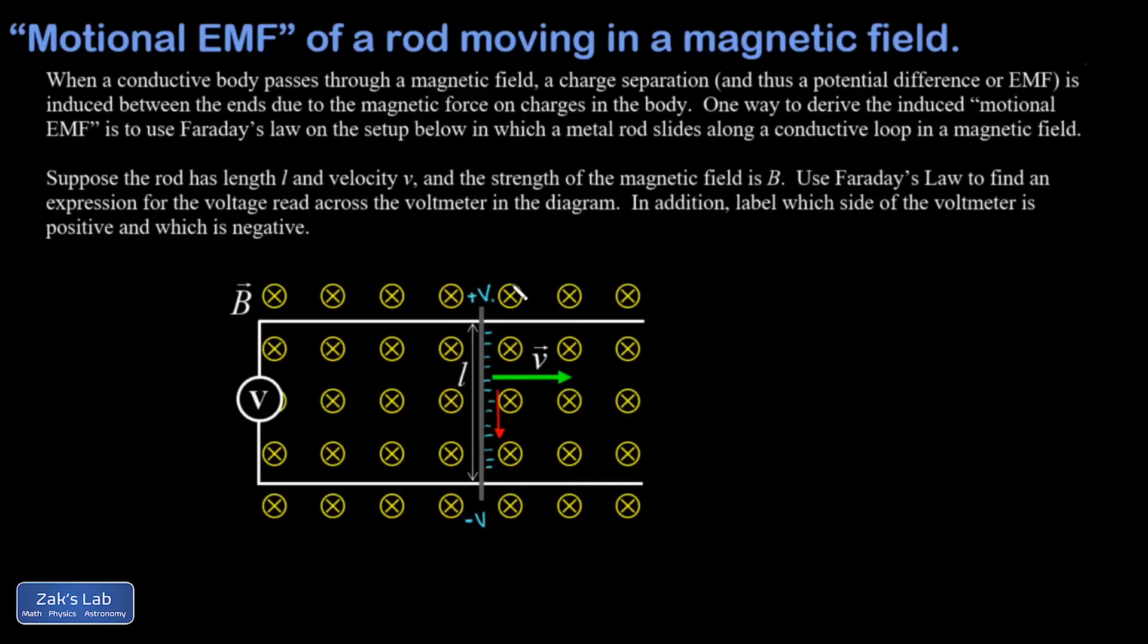So this force analysis tells us which way we would read the voltage with a voltmeter hooked up to this circuit. This metal rod is sliding along with the speed of V on these conductive wires, and my voltmeter is hooked up here to read the potential difference that's being induced. That force argument has given me the answer of which way that goes, and that's the follow-up question at the end. Positive on this side, negative on this side.